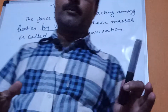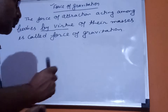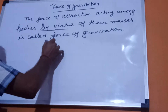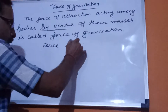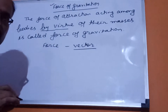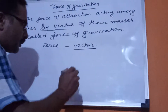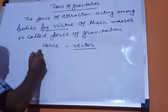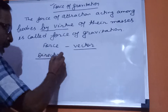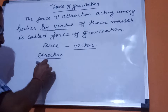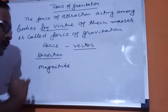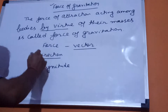Now, force of gravitation is a type of force, and it is a vector quantity. To define a vector quantity, it must have both direction and magnitude.